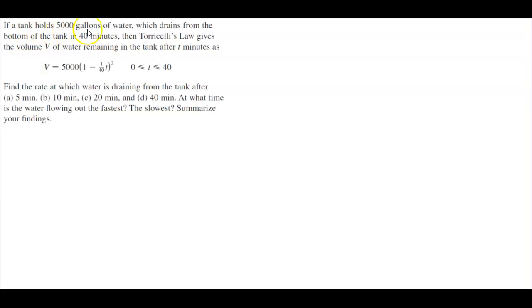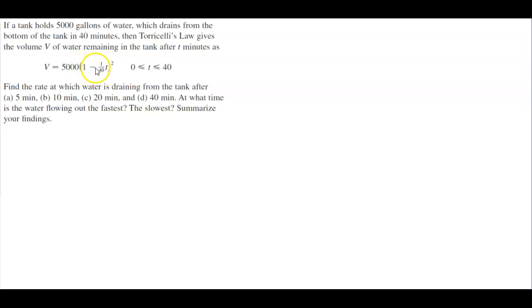If a tank holds 5,000 gallons of water, which drains from the bottom of the tank in 40 minutes, then Torricelli's law gives the volume V of water remaining in the tank after T minutes as V, which is equal to 5,000 times (1 minus 1/40 T) squared, where T is between 0 and 40 inclusive.